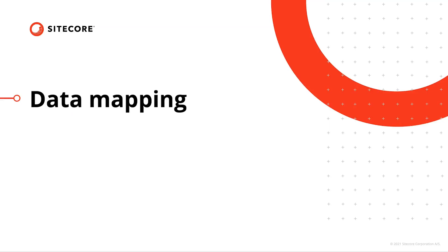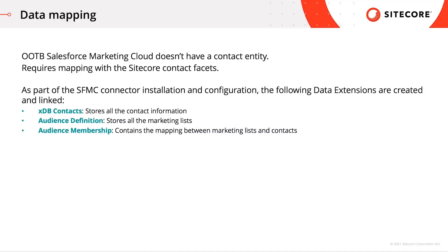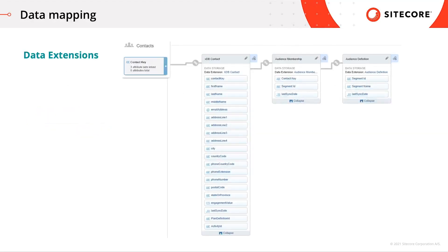Next we'll have a look at how data is mapped between the two systems in more detail. Out of the box, Salesforce Marketing Cloud doesn't have a contact entity and therefore it requires mapping with the Sitecore contact facets. As part of the Salesforce Marketing Cloud connector installation and configuration, the following data extensions are created and linked: XDB Contacts where all contact information is stored; the audience definition where all marketing lists are stored; and the audience membership data extension where the mapping between marketing lists and contacts is contained. We can check these custom data extensions under Contact Builder, under data extensions, where we find the XDB Contact, Audience Membership, and Audience Definition custom data extensions.